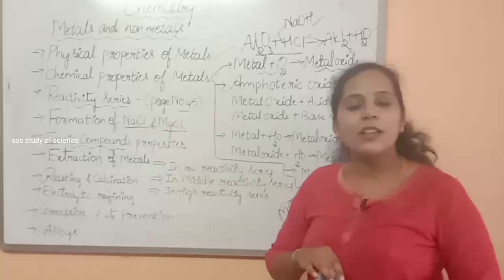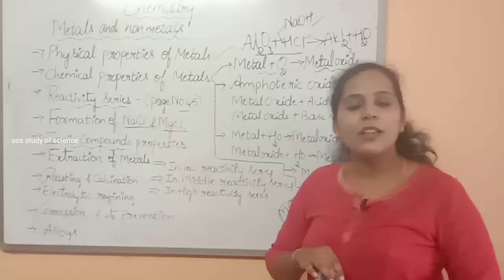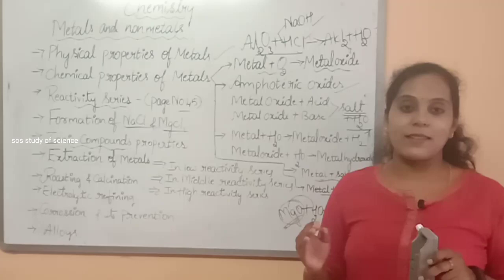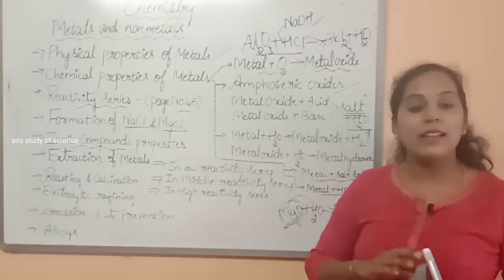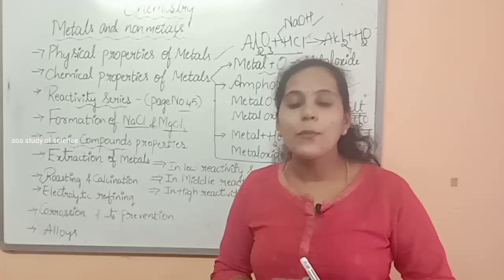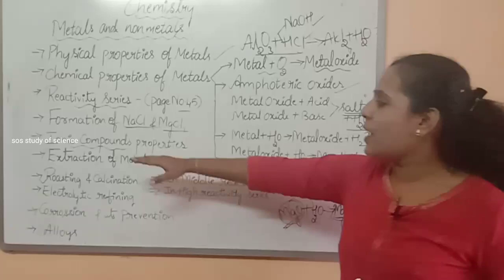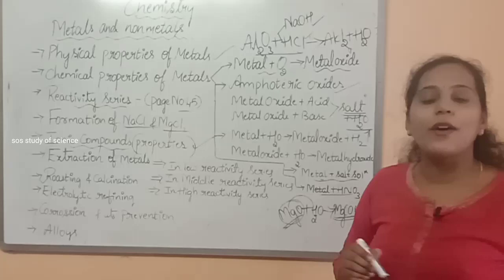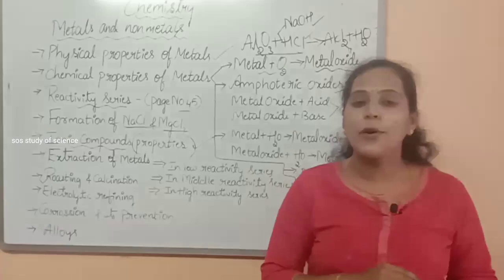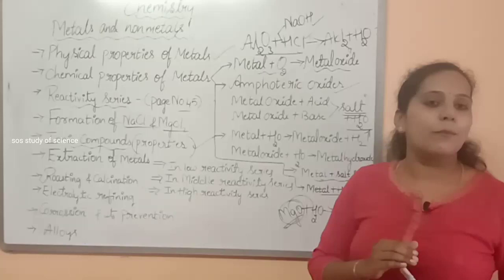Moving to the next concept: ionic compounds. What is meant by ionic compounds? What is meant by covalent compounds? Ionic compounds are the compounds formed when there is a transfer of electrons — for example, sodium chloride or magnesium chloride. Covalent compounds are formed by sharing of electrons, as in carbon and its compounds. You also have to learn about the properties of ionic compounds, which are very, very important.